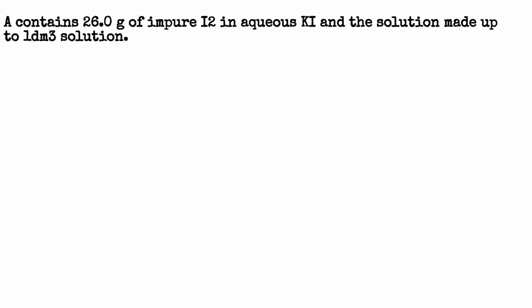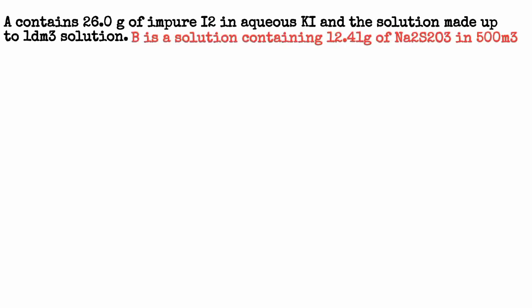Question: Solution A contains 6.0 grams of impure iodine dissolved in potassium iodide, and the solution is made up to one dm³. That is our solution A. Solution B contains 12.41 grams of sodium thiosulfate in 500 cm³. This solution B is our thiosulfate and it is not a standard solution. The mass given is 12.41 grams in 500 cm³.